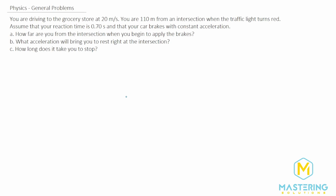They want to know how far you are from the intersection when you first begin to start the brakes. Part B says what acceleration will bring you to rest right at the intersection, and how long does it take you to stop. Starting with Part A, we need to figure out how far we are from the intersection when we first start braking.